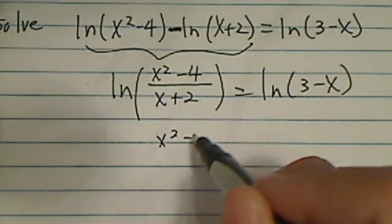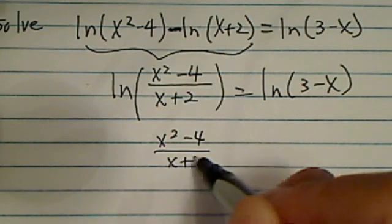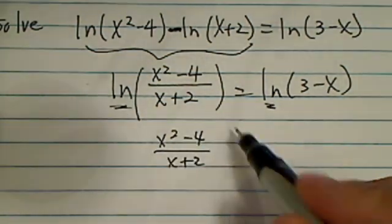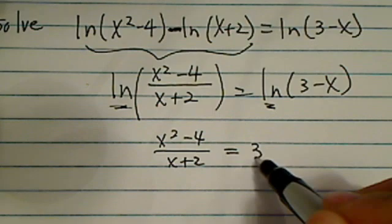you can pretty much compare and say x squared minus 4 over x plus 2, since there's natural log here and natural log over here, is equal to 3 minus x.